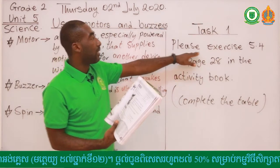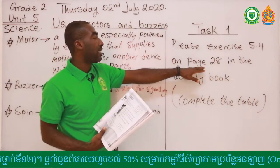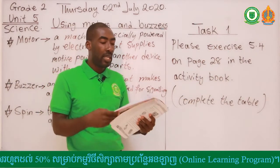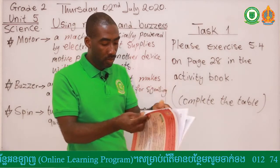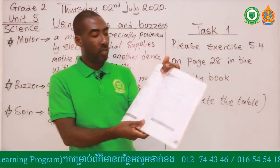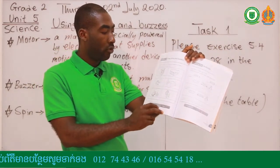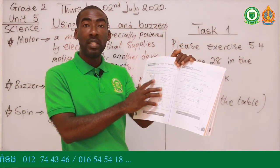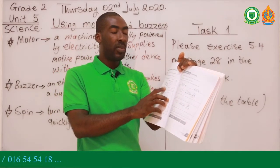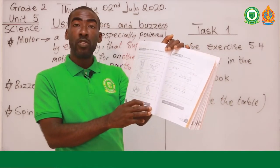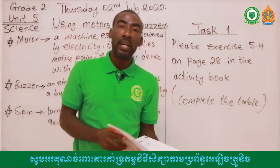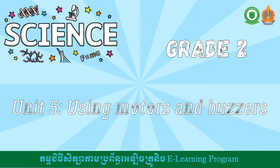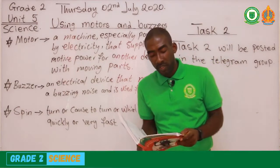I'm going to give you exercise 5.4, which you can find at page 28 of your activity book. There is a table there that you have to complete. The table is asking you to use either motor or buzzer. If the object uses a buzzer, write buzzer; if the object uses a motor, write motor. Please complete your task one and then we can go to our second video.